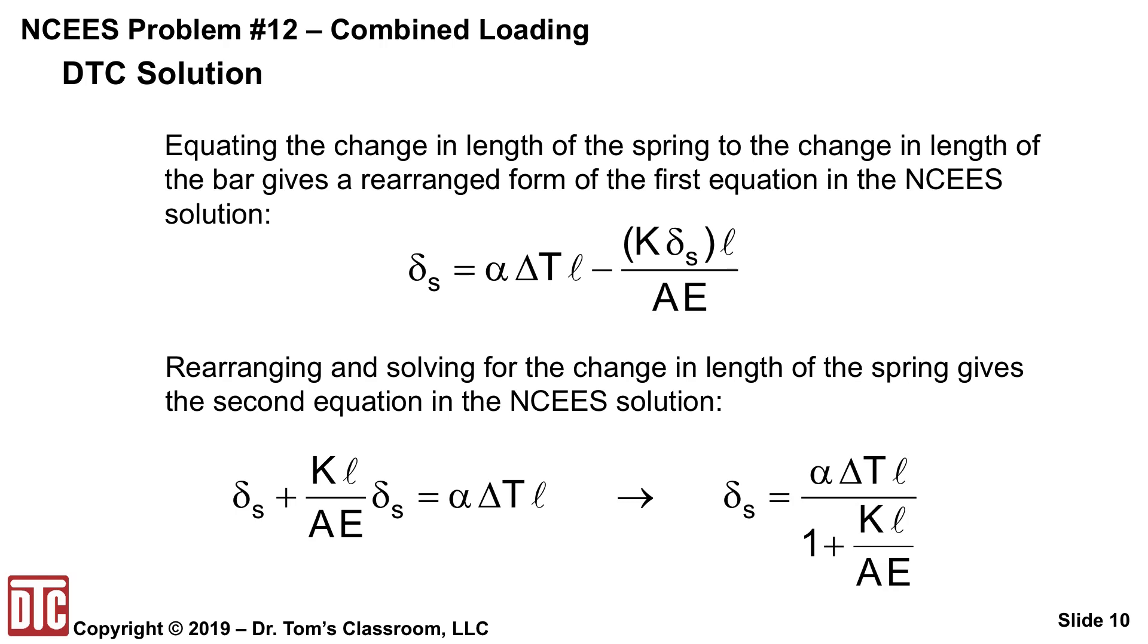So we can now rearrange this equation, we can pull the delta S term on the right to the left, so we've got delta S plus KL over AE times delta S equals alpha delta T L, and we can then collect terms. We have 1 plus KL over AE, divide through, and you get the equation that you see on the right: delta S is alpha delta T L over 1 plus KL divided by AE, and that's the one where people ask where did that come from? Well, I think we've now made that clear.